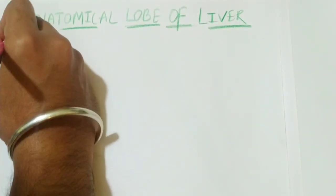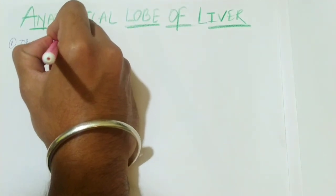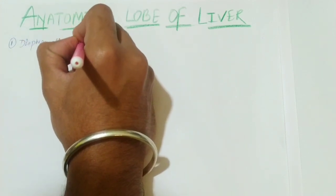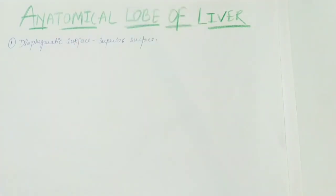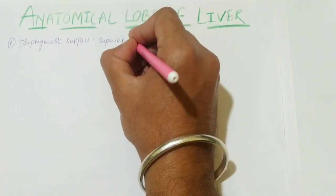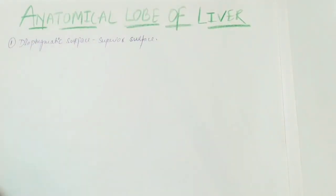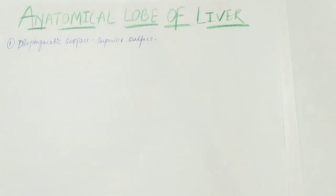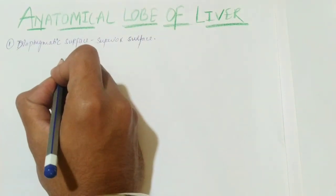The first surface is the diaphragmatic surface, also called the superior surface of the liver. This surface has actually one border — there is no lateral or medial border. There is only one border, called the inferior border, which divides the superior diaphragmatic surface and the visceral surface. There is a posterior border but it is very blunt and is considered part of the posterior part of the liver. I will now draw the diagram of the diaphragmatic surface from the anterior or superior side to make it easier.